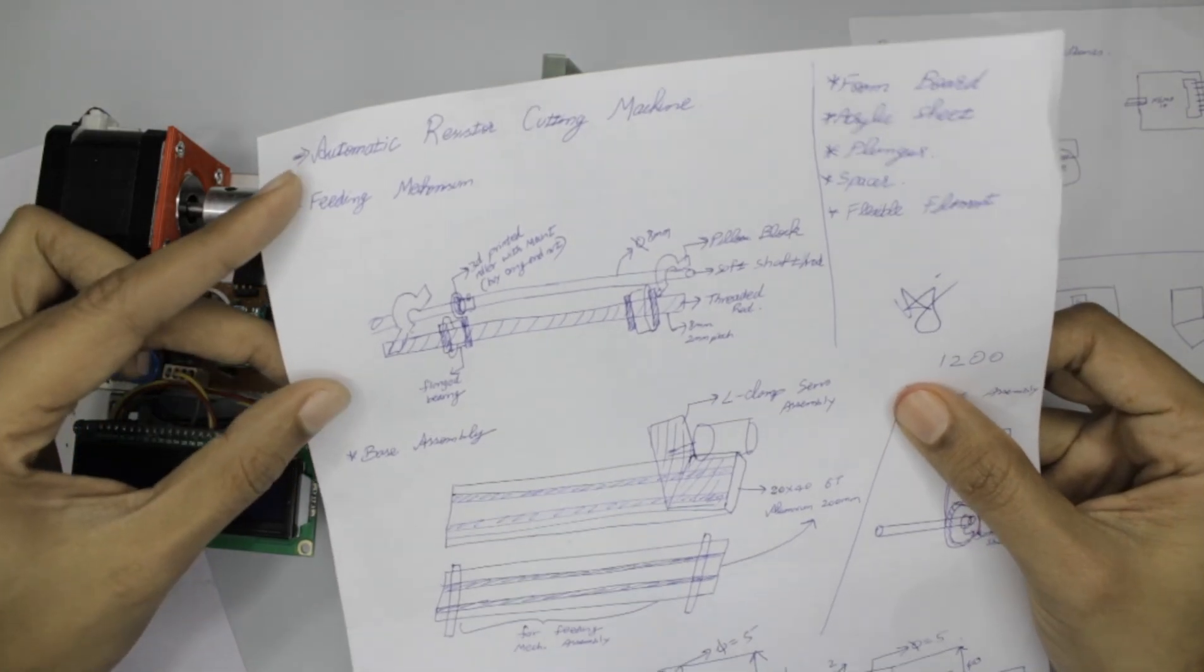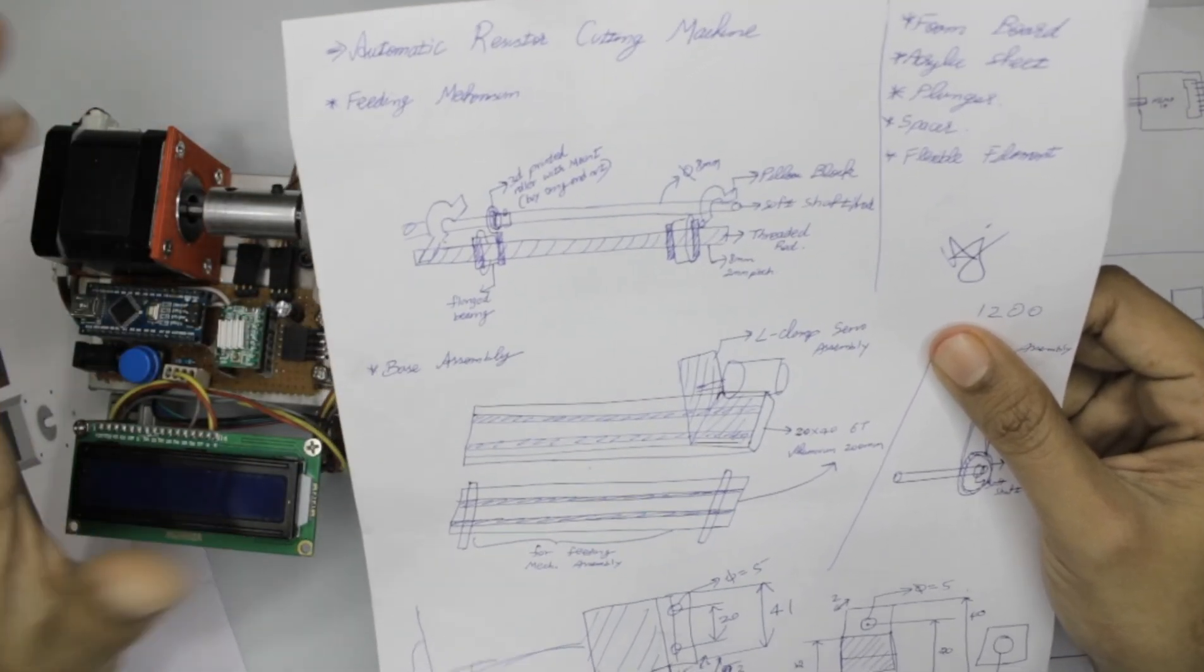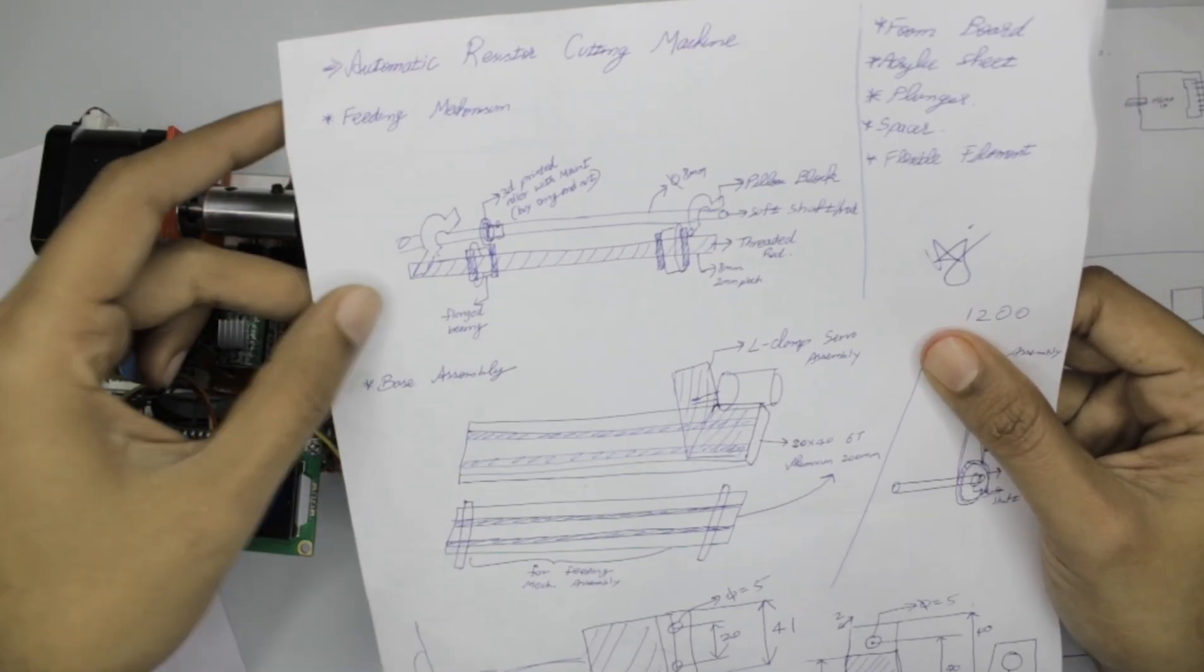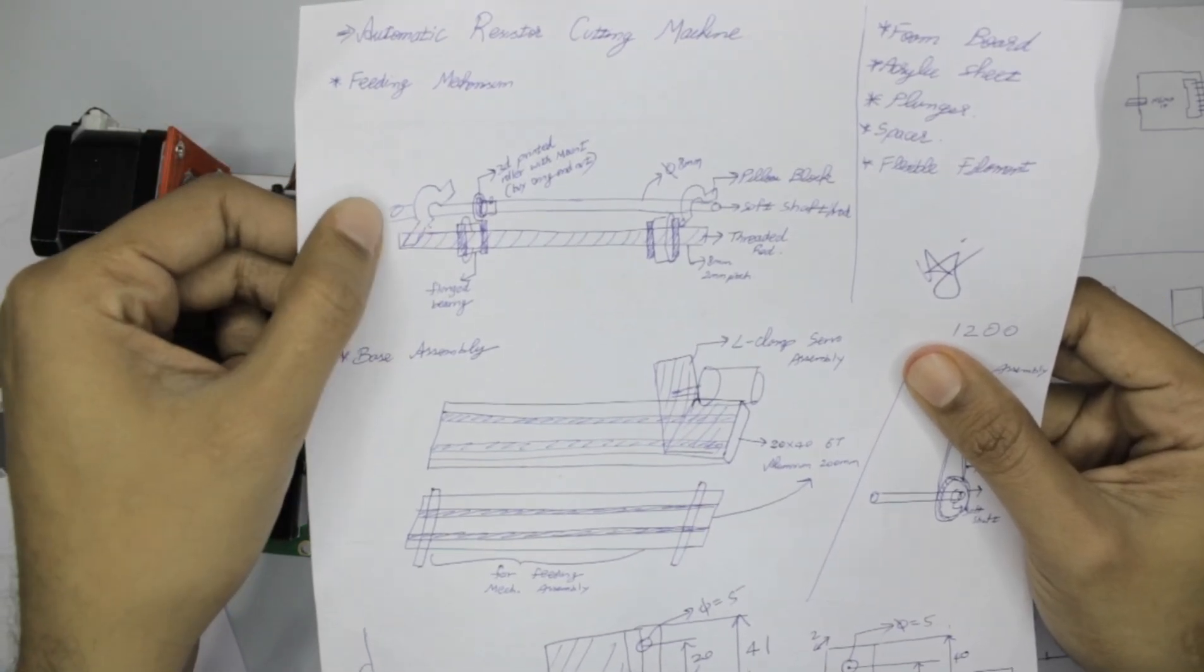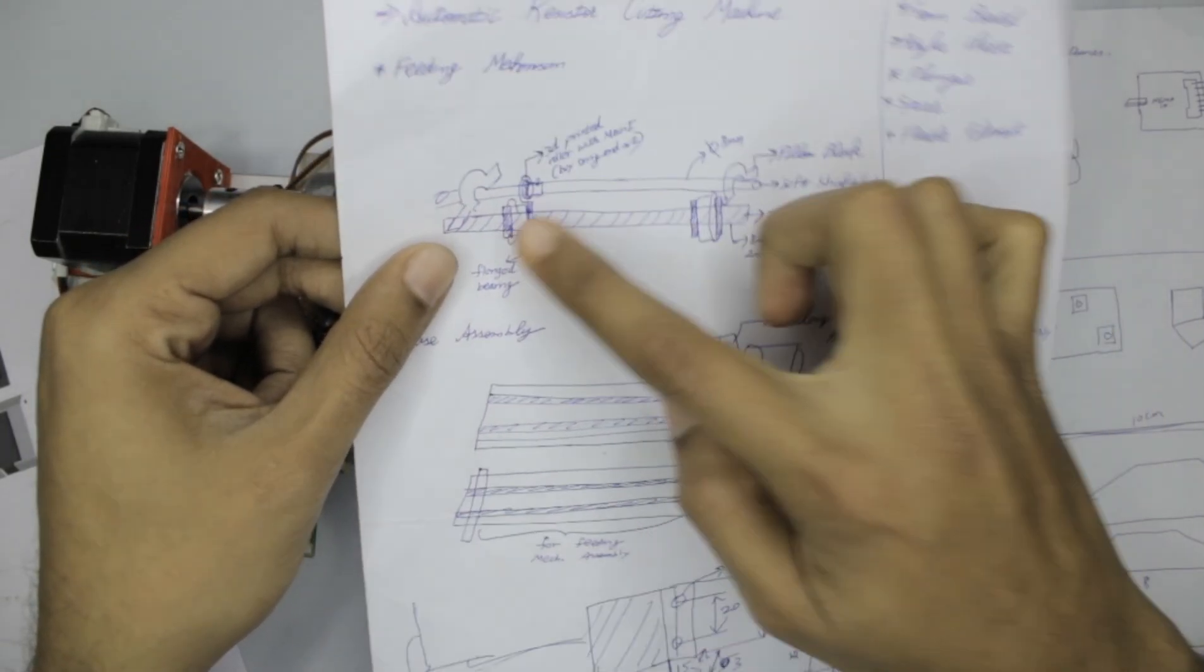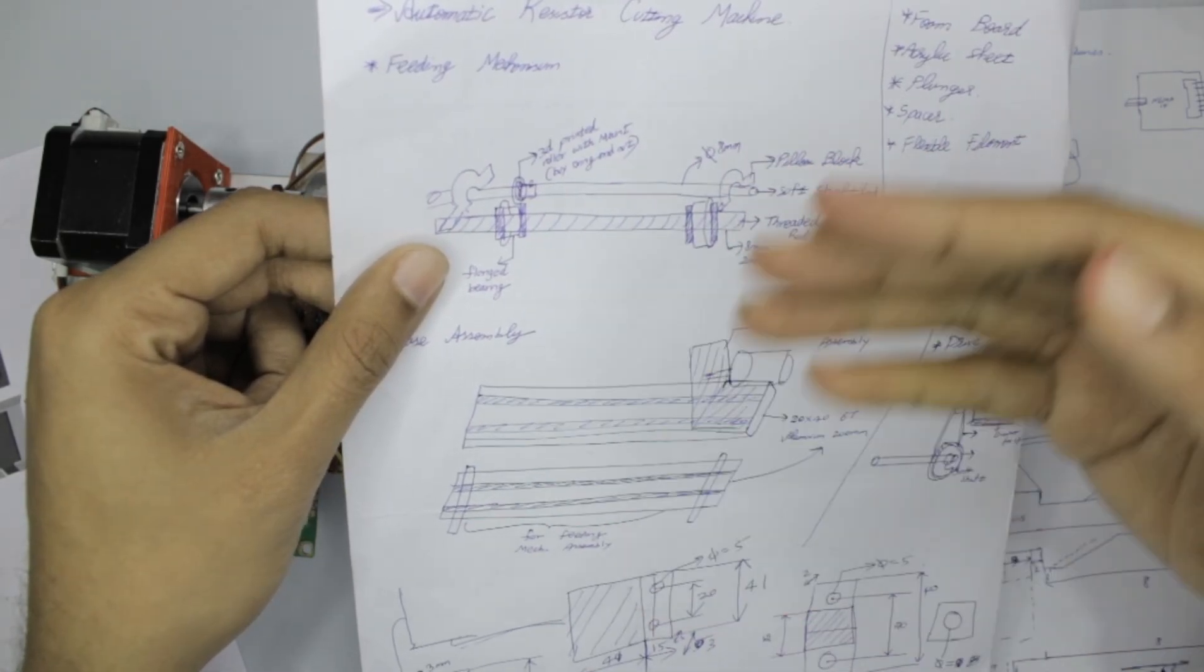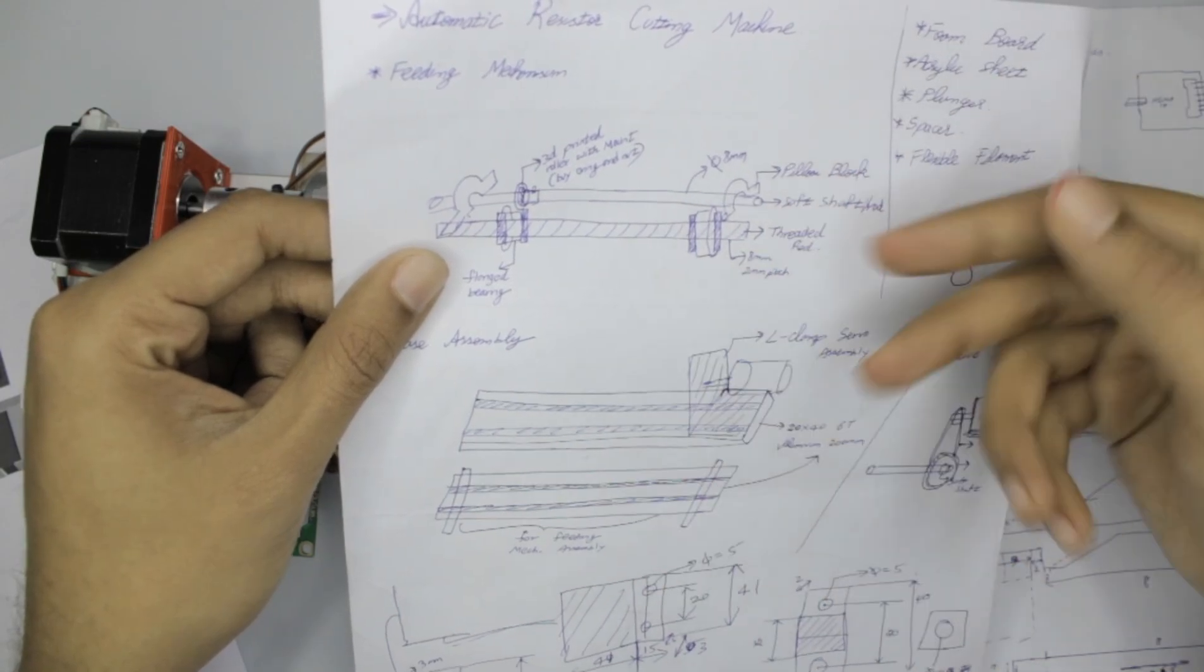The feeding mechanism was completely inspired by a similar resistor cutting machine built by Mr. Innovator's YouTube channel. It has a threaded rod, a soft shaft, two pillow blocks, and then on the threaded rod we have two bearings held in place. On the soft shaft we have a 3D printed roller used to feed the resistor into the cutting area.